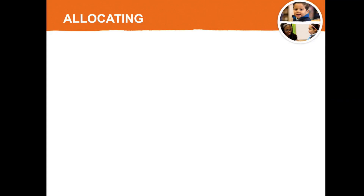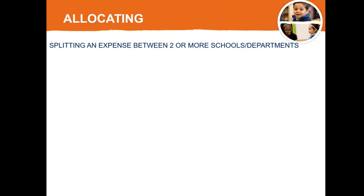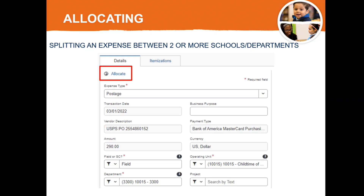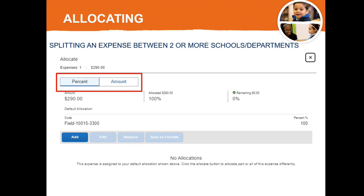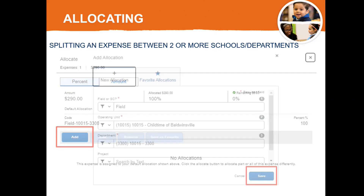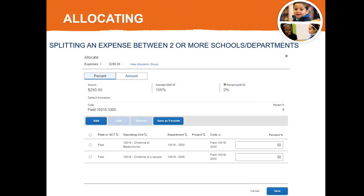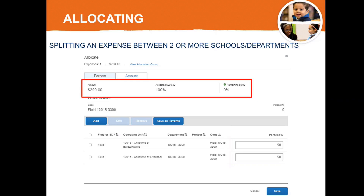Now let's take a look at allocating an expense, which means splitting an expense between two or more schools or departments. From within the expense details, select Allocate. In the pop-up that appears, choose whether you want to split the expense by percent or amount, then select Add to enter the details for the first allocation. Follow the same process we went over for cross-charging to add the school or department details, then select Save. Continue adding allocations until all schools or departments are listed, then enter the amount or percent to allocate to each. For this example, I chose to allocate 50% of this expense to each school. Ensure the amount and allocated amount match and there are $0 remaining. If you'll be using these allocations frequently, you can Save as a Favorite for faster reconciling in the future, then choose Save.